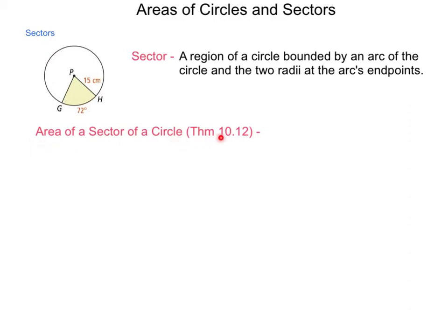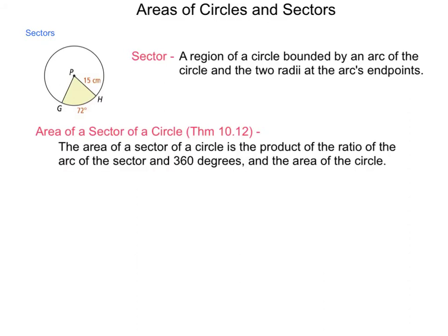So, in order to calculate the area of a sector of a circle, theorem 10-12, we use the theorem that the area of a sector of a circle is the product of the ratio of the arc of the sector and 360 degrees, and the area of the circle. So, in other words, the area of the sector, we'll call it sector PGH, is equal to arc GH, the measure of arc GH, over 360 degrees, times the area that the circle would produce.